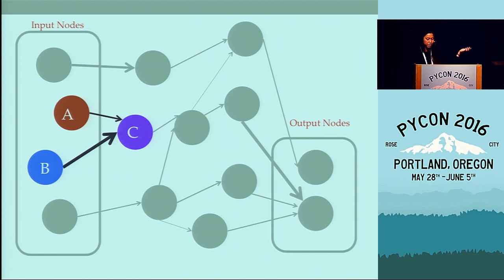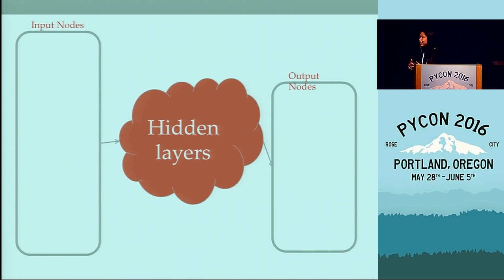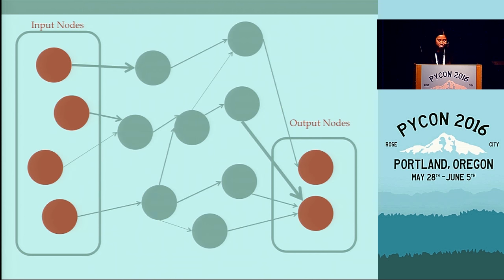Once a node computes its own value, it feeds information forward to the next layer and so forth until the output nodes have their own values. Here we have C, and C will influence D. The layers include the input nodes and the output nodes and everything in between, which we call the hidden layers, which is a shame because they do most of the work and receive none of the glory. Neural networks are traditionally used for classification problems.